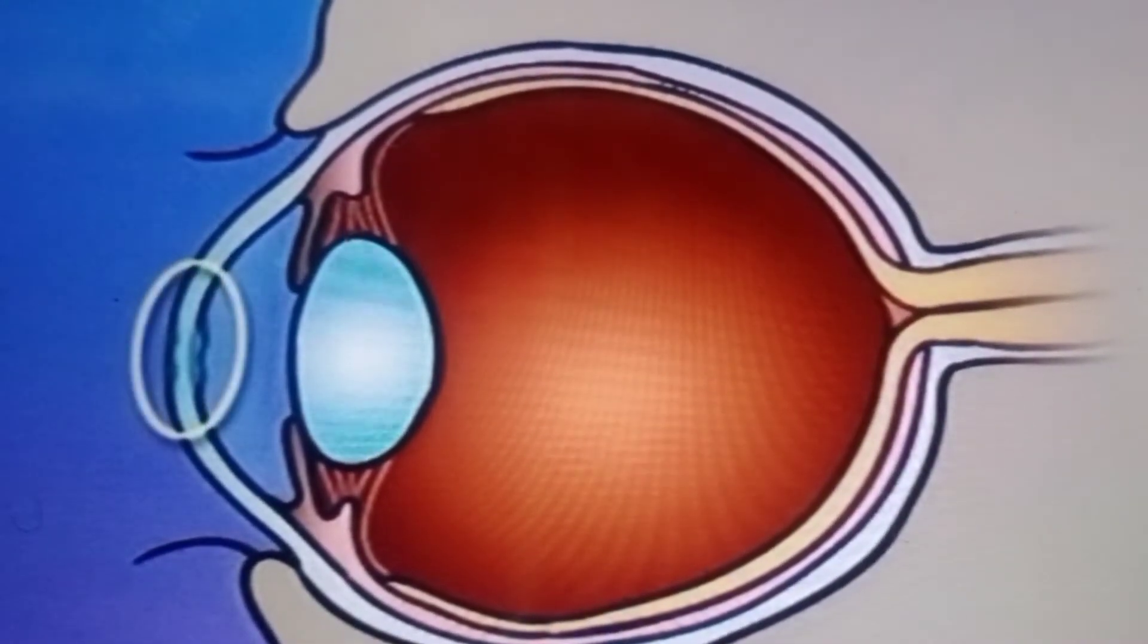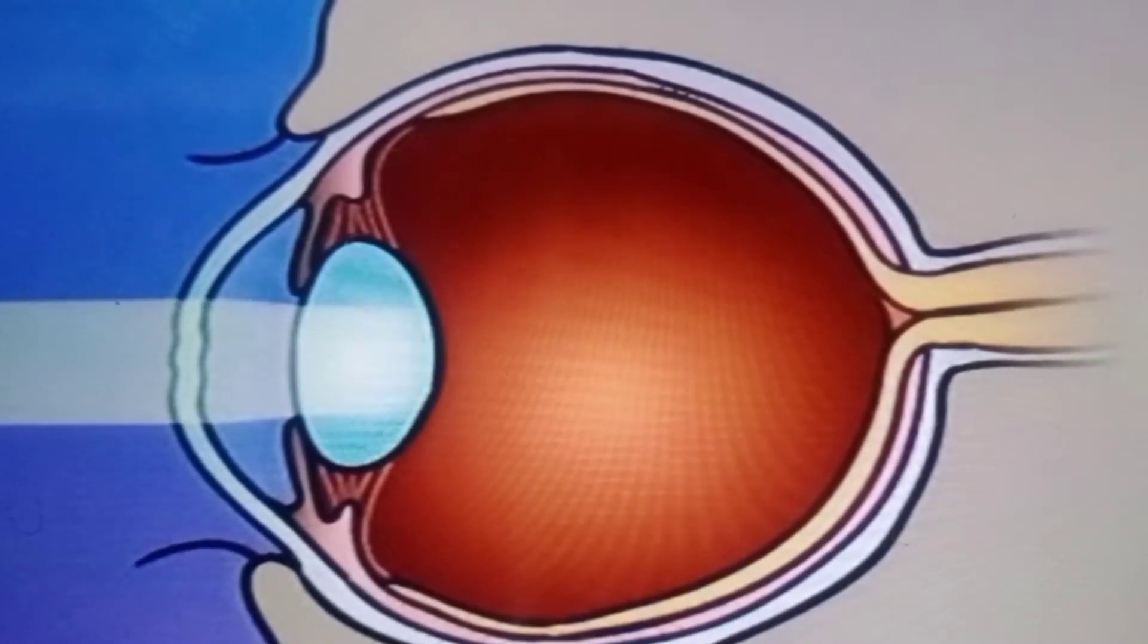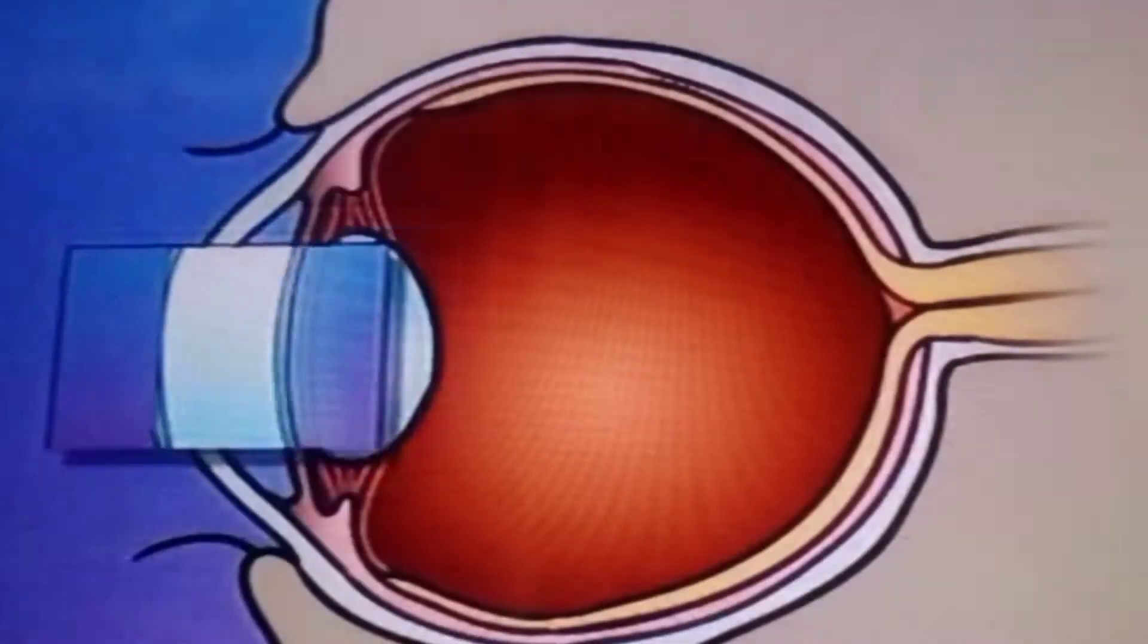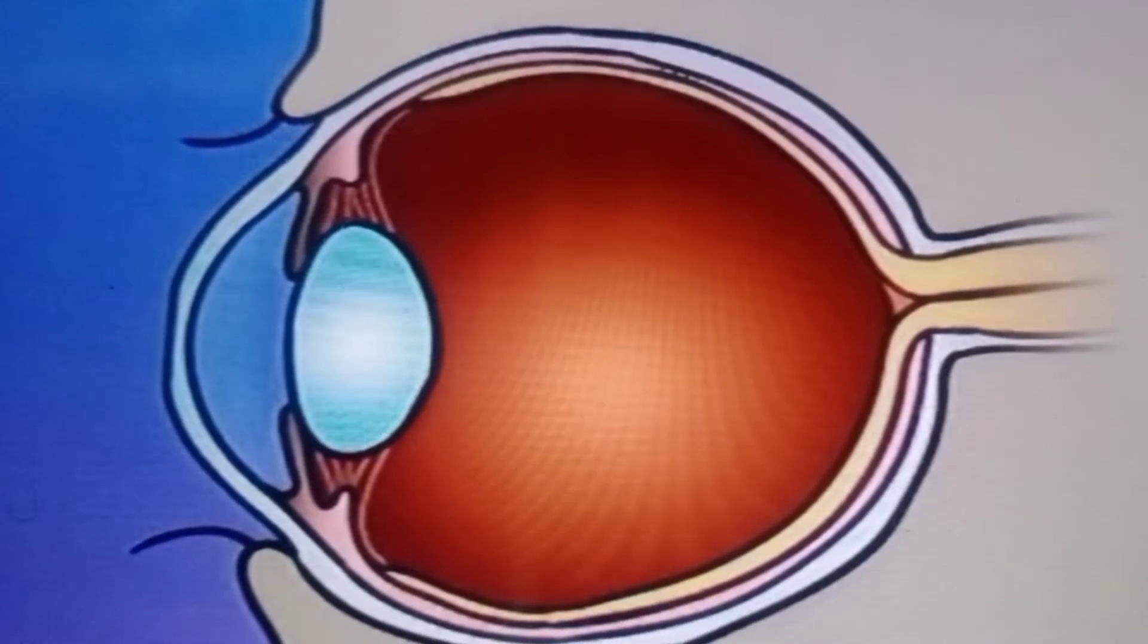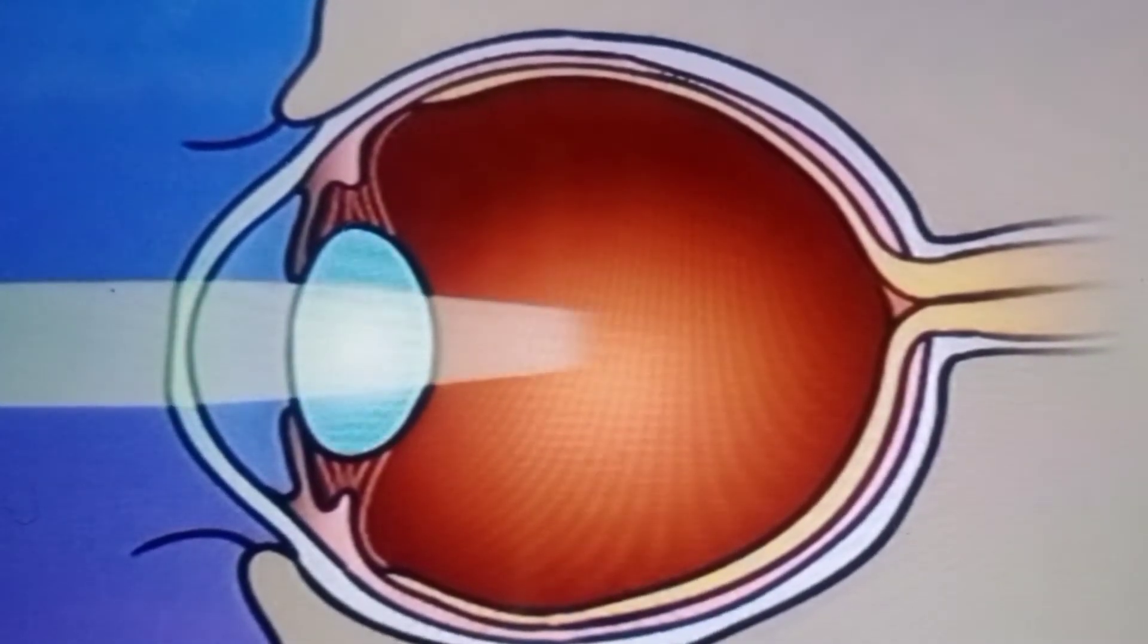Astigmatism occurs when the cornea is unevenly curved, causing light rays to fall off center or not to focus properly at all. In either case, PRK laser surgery can be used to flatten all or part of the cornea, allowing your doctor to cause the focal point of light entering the eye to fall more closely to the center of the surface of the retina.